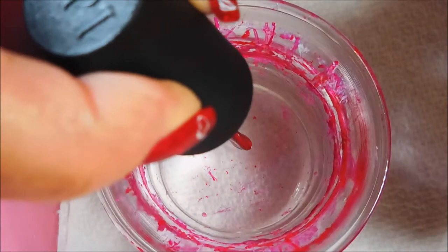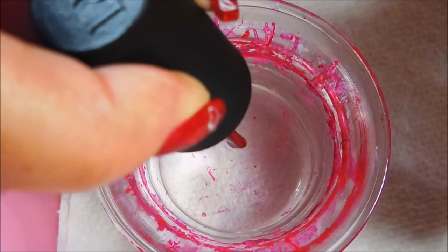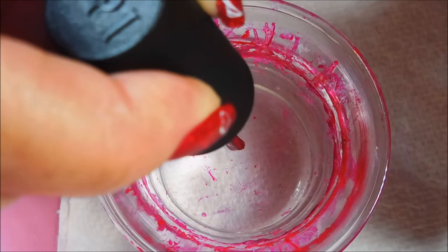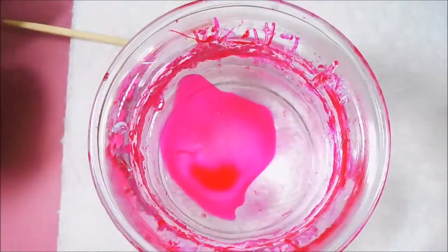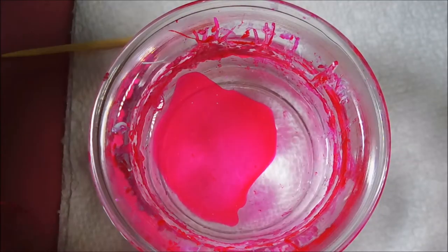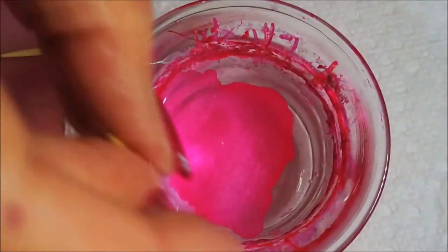Alrighty, here we go. We're going to build a bullseye. I'm going to start with the red one first. Cinnamon Sweet, maybe. I'll get my little toothpick running around.